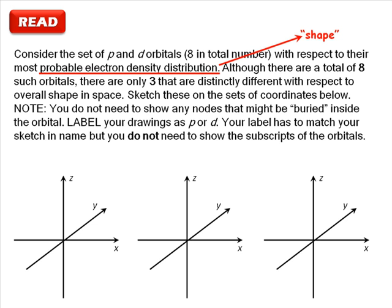You are told there are 8 orbitals in total, specifically these are the 3p and 5d orbitals. But there are only 3 distinctly different shapes. You must sketch the 3 possible shapes.